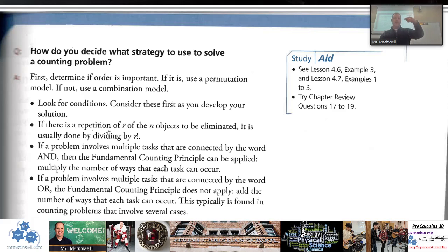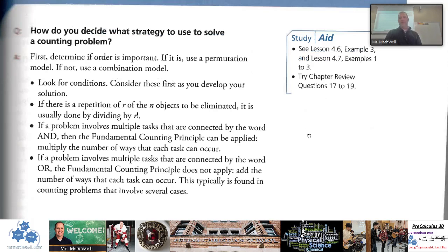Repetition—make sure you divide by a factorial, b factorial, c factorial, however many repeating objects you have. If a problem involves multiple tasks that are connected by the word 'and,' we know that the FCP, fundamental counting principle, can be applied and you usually multiply those, right? And is multiply. If the problem is an 'or,' then the fundamental counting principle may not apply and you may have to add. And this is particularly true with cases. And again, we just talked about this in our 4.7 lesson. But if there's cases, you're adding the results from each case.